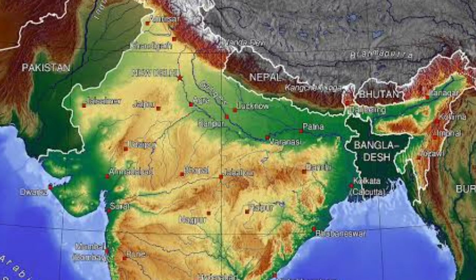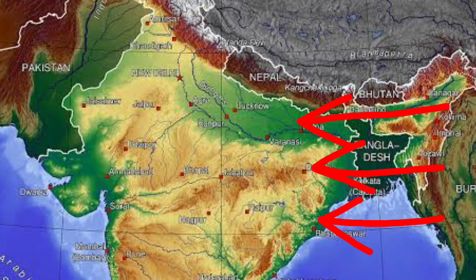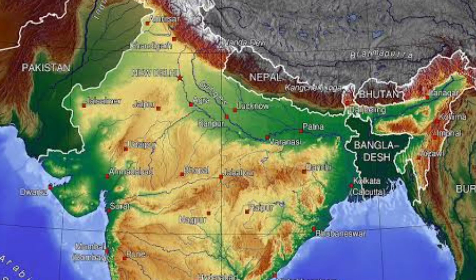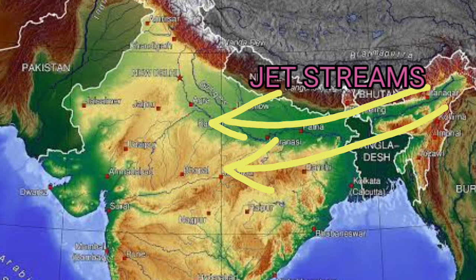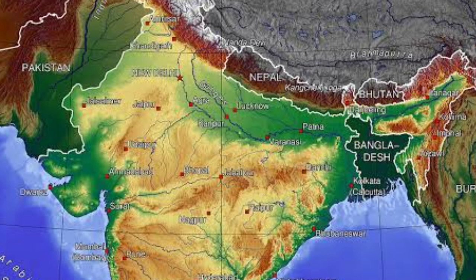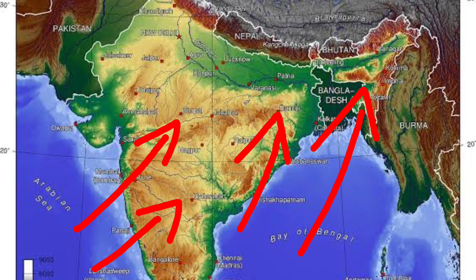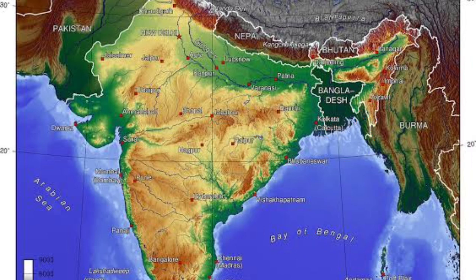During summer months, central India receives direct rays of the Sun, which leads to the development of low pressure. This low pressure gets further intensified because of the easterly jet streams, as discussed in the previous video. The sea remains at higher pressure, and hence winds start blowing from sea towards the land — these winds are termed monsoon winds.